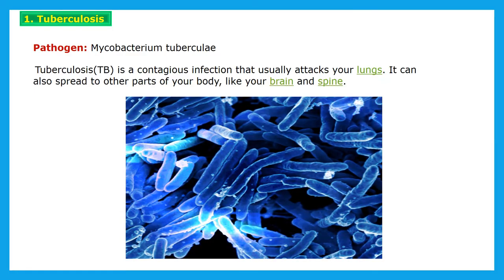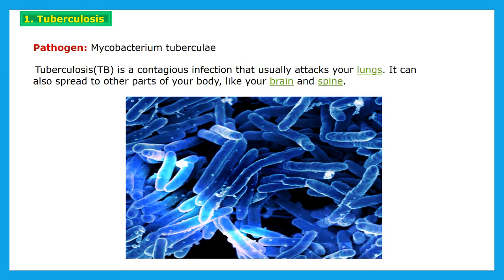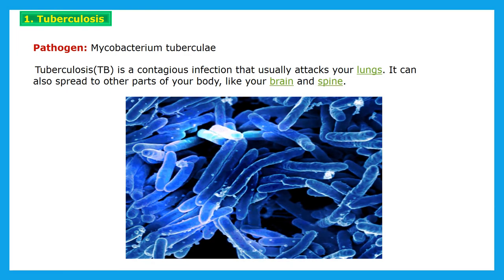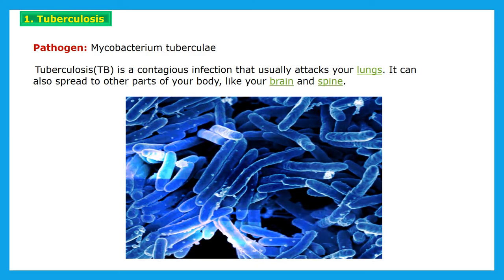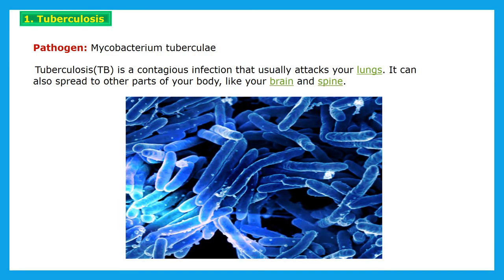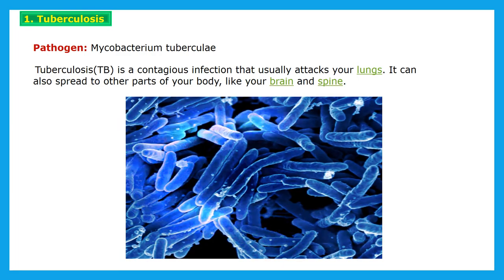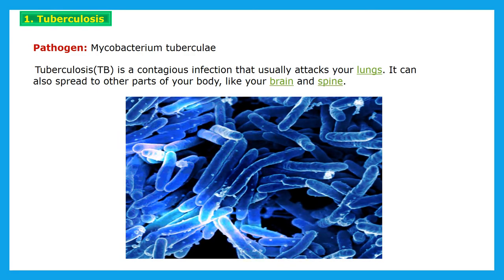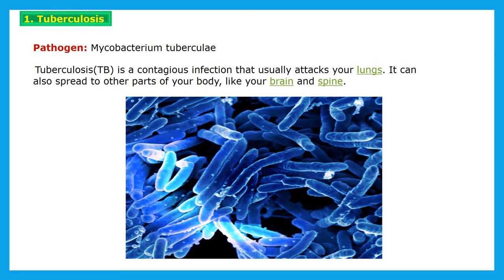The first disease is tuberculosis. This tuberculosis disease is caused through the pathogen — that is bacteria — Mycobacterium tuberculosis. This bacteria can spread through contaminated air, water, food, or sometimes other vectors also. Tuberculosis is a contagious infection that usually attacks the lungs. It can also spread to other parts of the body like the brain and spine, but usually it attacks the lungs.